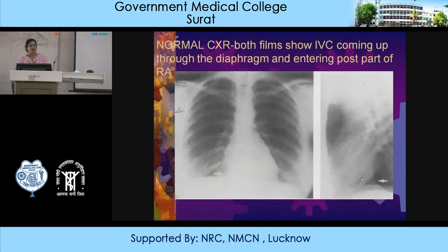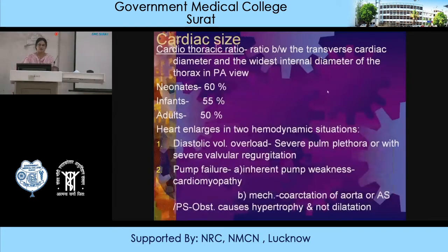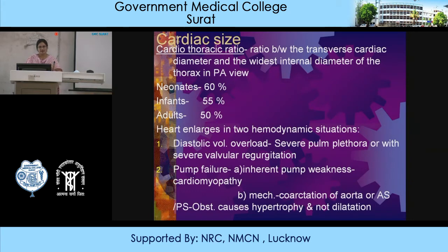Regarding cardiac size: the cardiothoracic ratio is the ratio between the transverse cardiac diameter and the widest internal diameter of the thorax on PA view. In neonates it's 60%, infants 55%, and adults 50%. The heart enlarges in two hemodynamic situations: diastolic volume overload leading to severe pulmonary plethora or valvular regurgitation; and failure due to inherent pump weakness — cardiomyopathy — or mechanical causes like coarctation, AS, or PS.